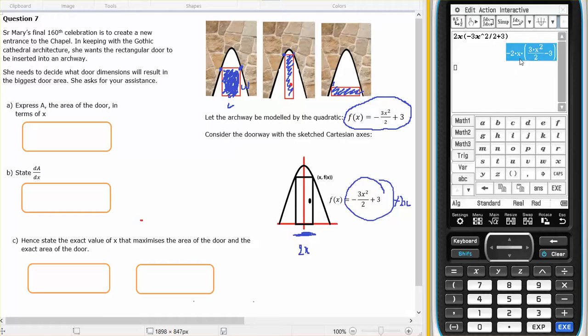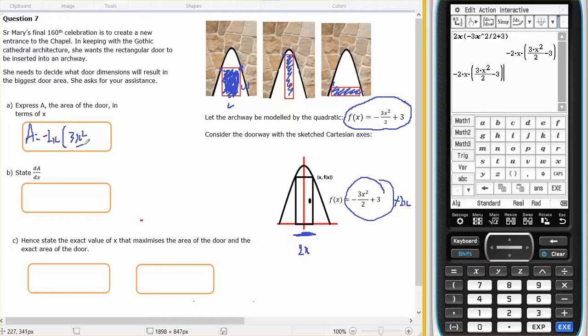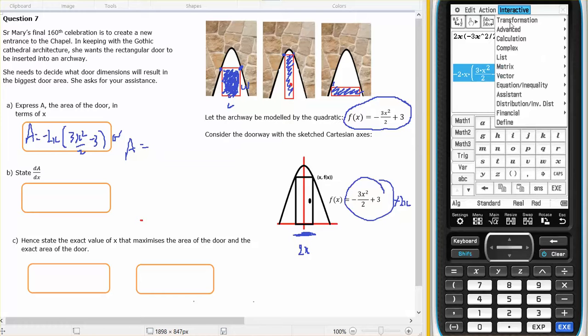And if I want to expand it, I could write that. I could say that the area equals minus 2X, 3X squared on 2 minus 3. Or I could write A equals, and I could expand it. Both of them are perfectly acceptable.